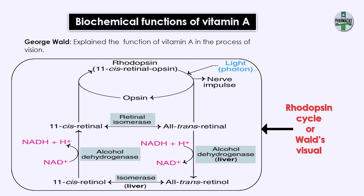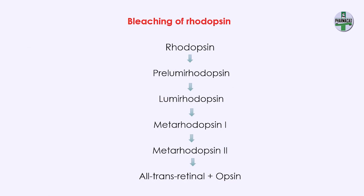Dark adaptation time is the time it takes for the eyes to adjust when an individual moves from bright light to dim light. After a few minutes we adapt to the dark because rhodopsin is re-synthesized. In individuals where vitamin A is deficient there is an increase in dark adaptation time, meaning they take more time to adapt to darkness. In the presence of light, rhodopsin, which is red in color, gets converted to yellow — this process is called bleaching of rhodopsin. It occurs in a few milliseconds, during which many unstable intermediates are formed.